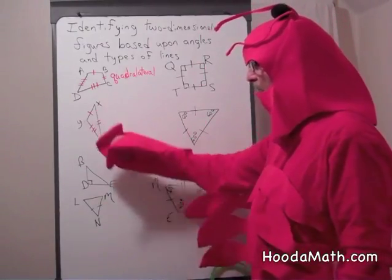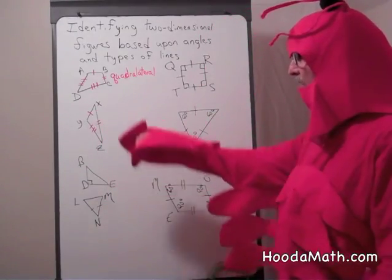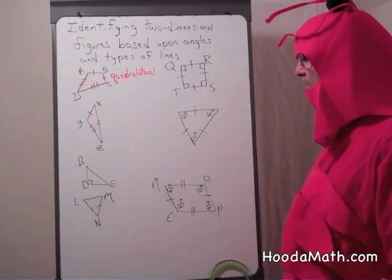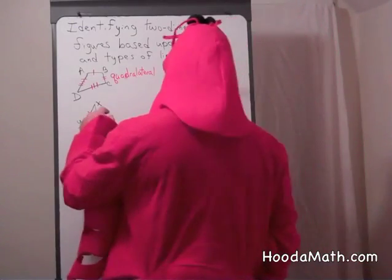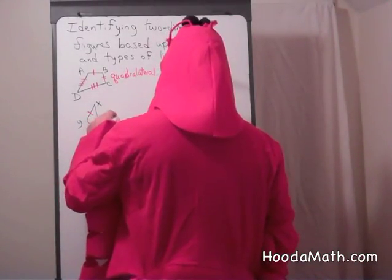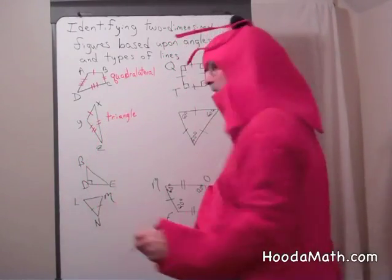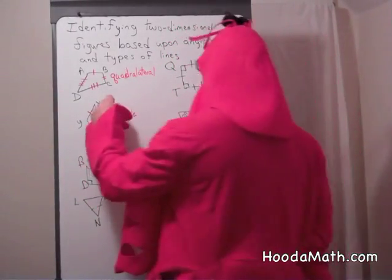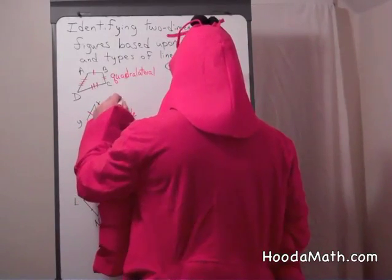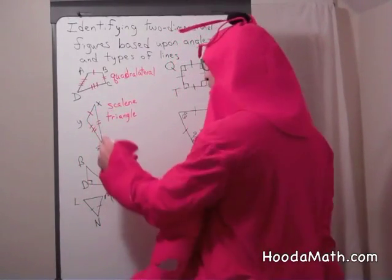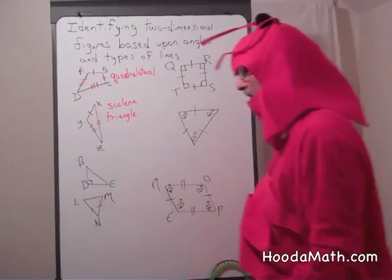This is a three-sided figure. All of its sides are different. It's called a triangle. But since all the sides are different, you might call it a scalene triangle. Since all the sides are different, all the angles are different as well.